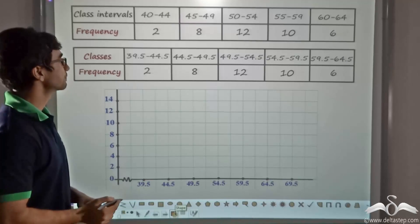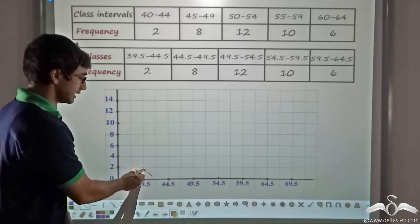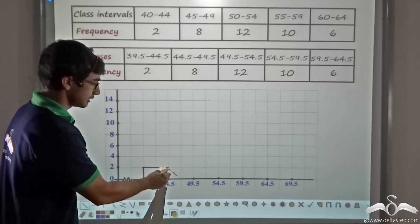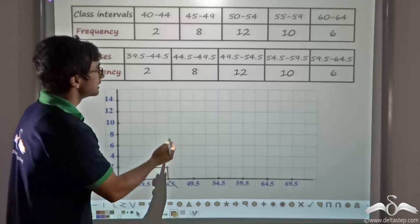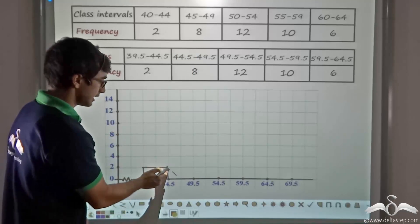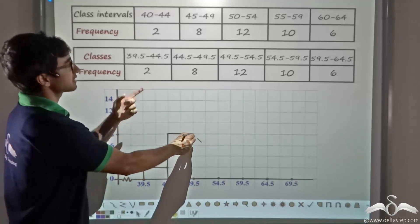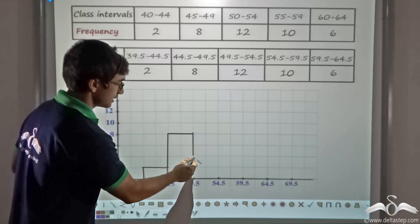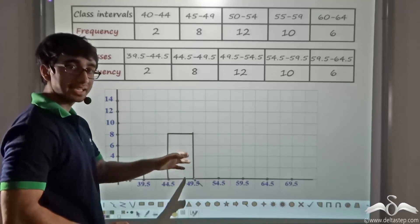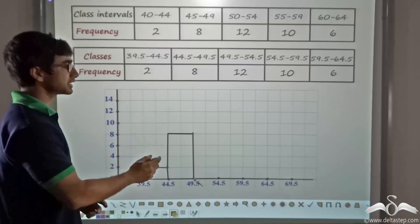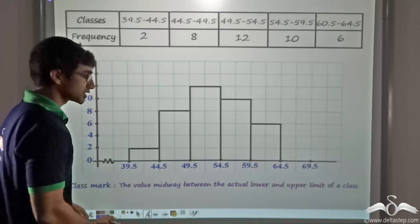For the first class we have a frequency of 2. From 39.5 I draw a vertical line up to frequency 2, then a horizontal line to the upper class limit, and from there a vertical line downward. For the second class with frequency 8, I draw a vertical line upward, followed by a horizontal line to the upper class limit of the second class, followed by a vertical line downward. Each bar formed must be a rectangle. Continuing this way, I get the complete histogram.